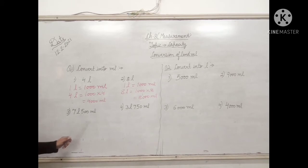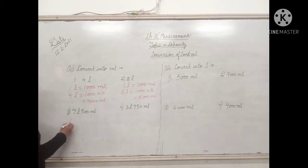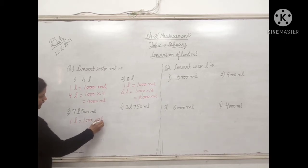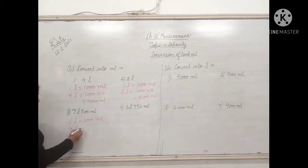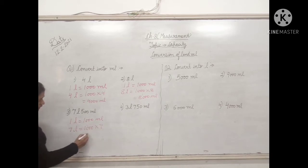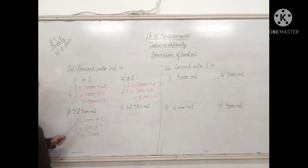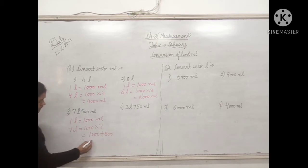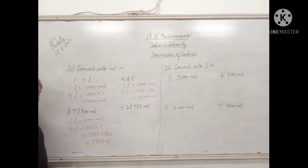Third sum: 7 liters. Again write the formula: 1 liter equals 1000 milliliter. So 7 liter equals 1000 multiplied by 7, that is 7000. Now milliliters have also been given, so plus 500. The answer is 7500 milliliter.